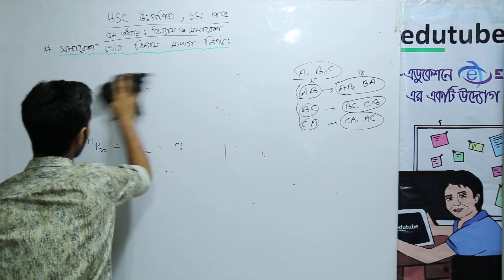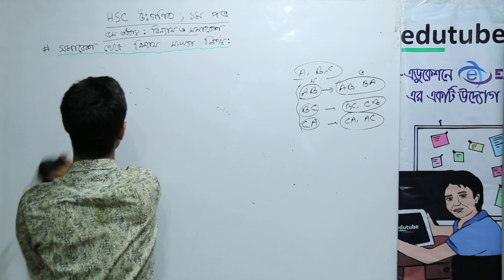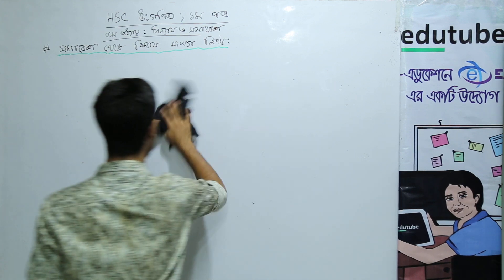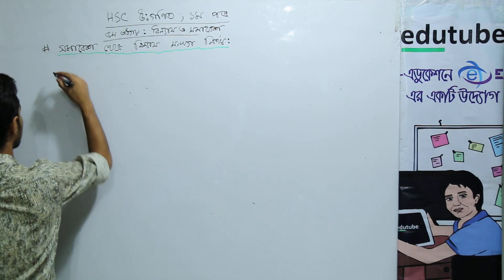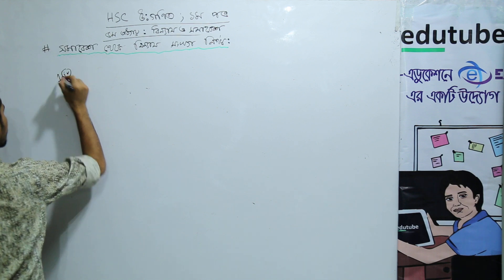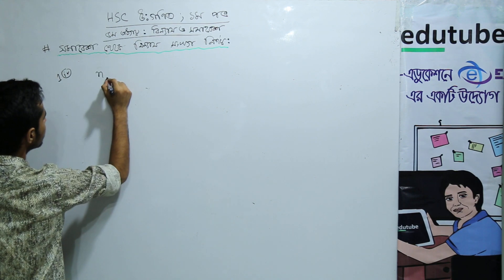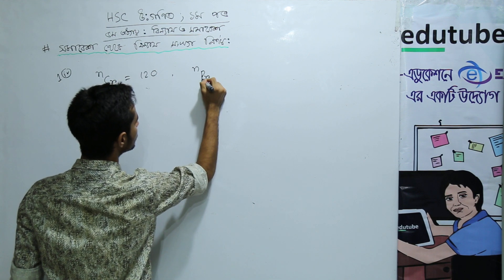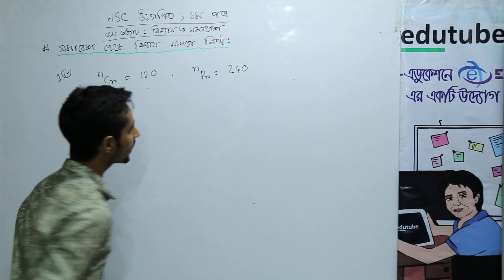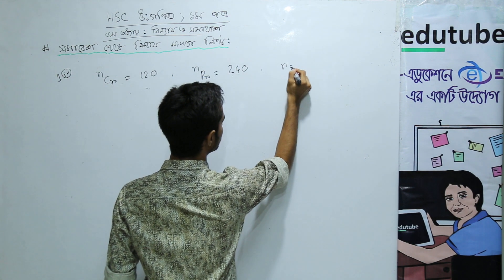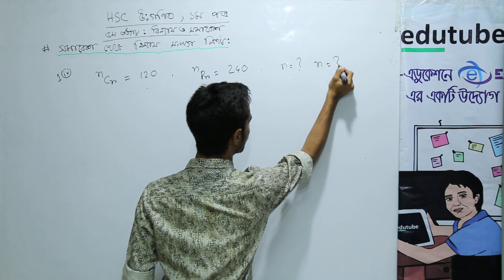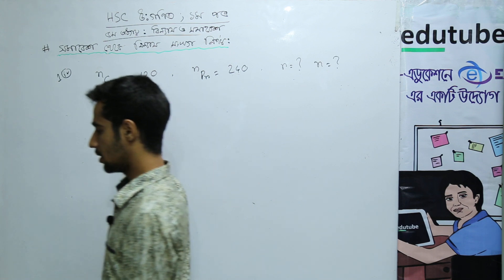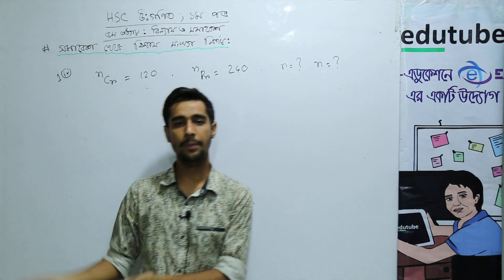I have a question and answer. I have 4 numbers. The question is: NCR is equal to 120, NPR is equal to 240. We need to find R and N. This is a question related to NPR and NCR.